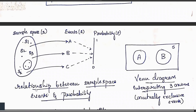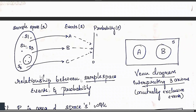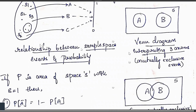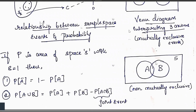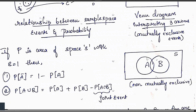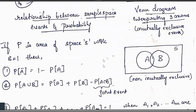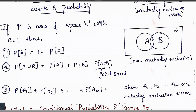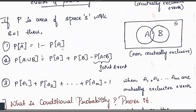The relationship between sample space, events, and probability: a sample space maps to an event, and that event has a probability between 0 and 1. A and B are two events lying within sample space S. If they don't overlap, they are mutually exclusive; if there is a common region, they are not. If P is the area of space S with P(S) = 1, then P(Ā) = 1 − P(A). Also, P(A ∪ B) = P(A) + P(B) − P(A ∩ B), where A ∩ B is called a joint event.